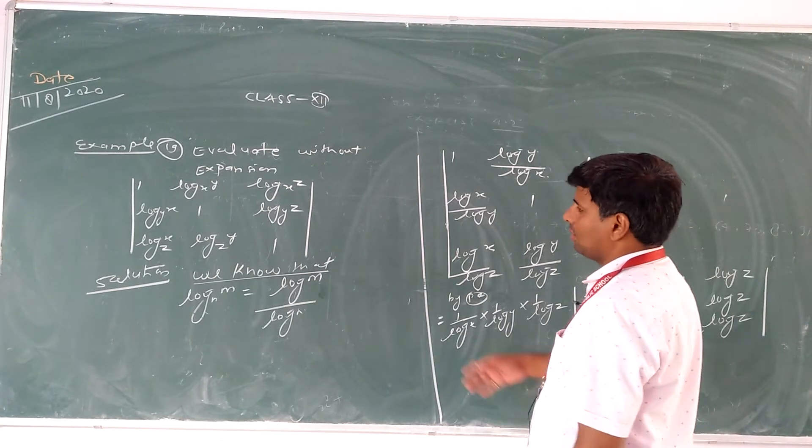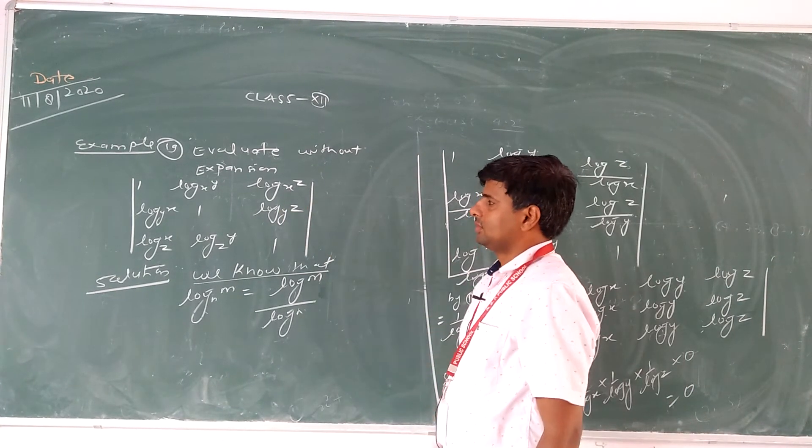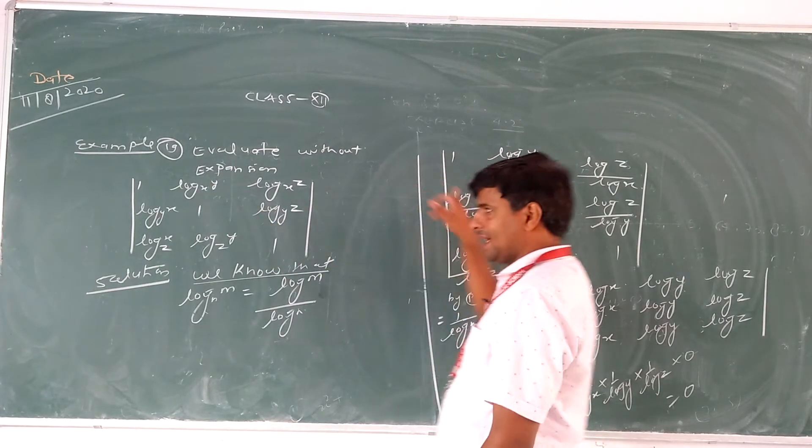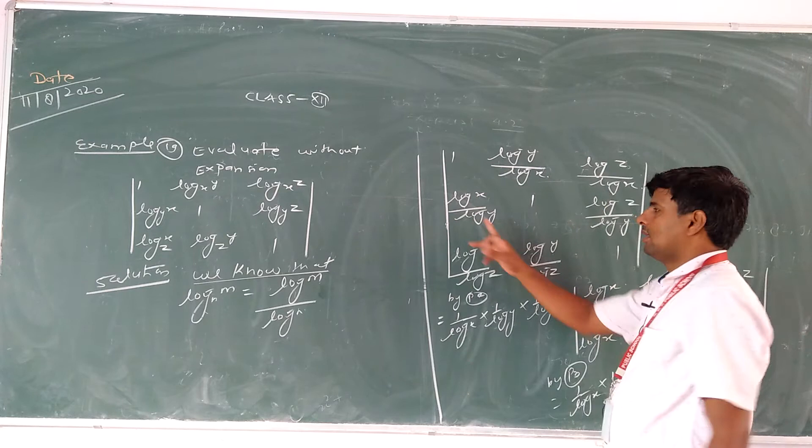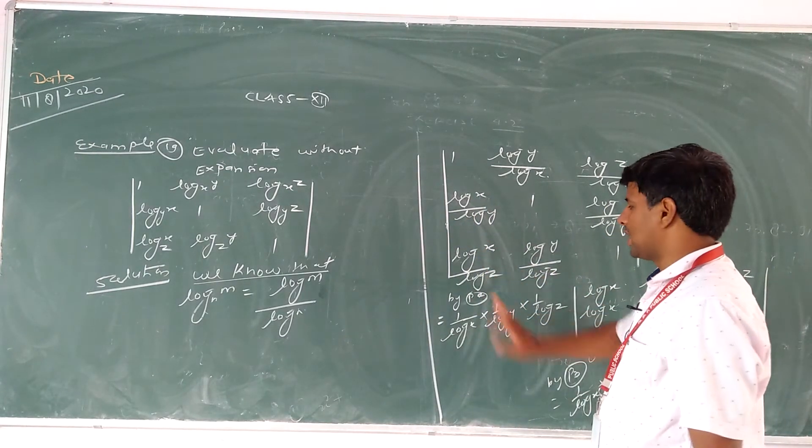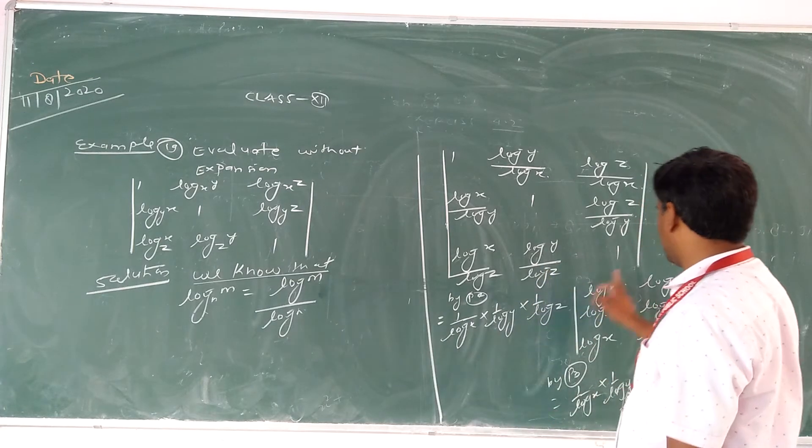We can write down this question as: 1, log y by log x, log z by log x; log x by log y, 1, log z by log y; log x by log z, log y by log z, 1.